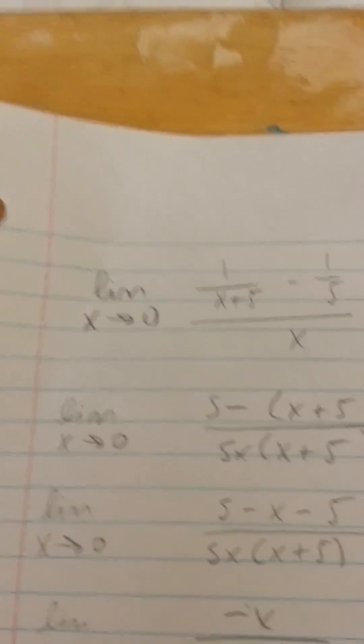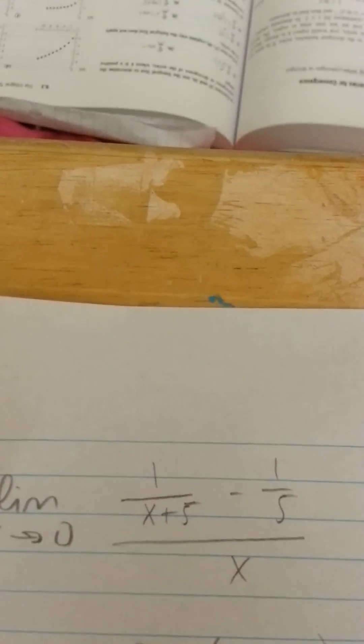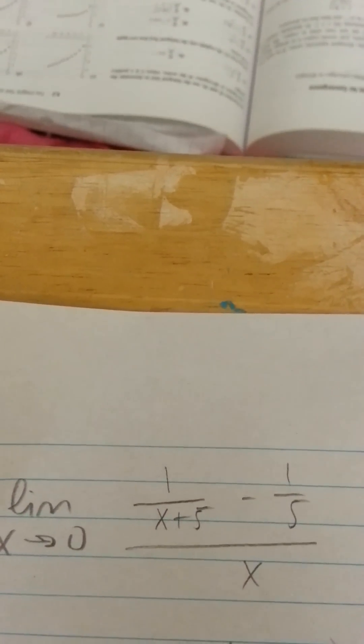Okay, the problem that we have is to find the limit as x approaches 0. Now we can't plug in a 0 right away because then we'd end up with a 0 in our denominator and that's a problem.